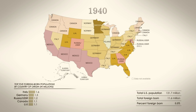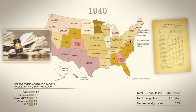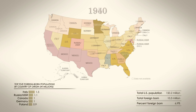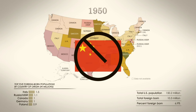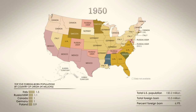By 1940, the quotas and other congressional measures passed in the previous decade to restrict immigration sharply cut the foreign-born population to below 9%. 1950 saw the effects of the repeal of the Chinese Exclusion Act, as Chinese immigrants were finally welcomed back.